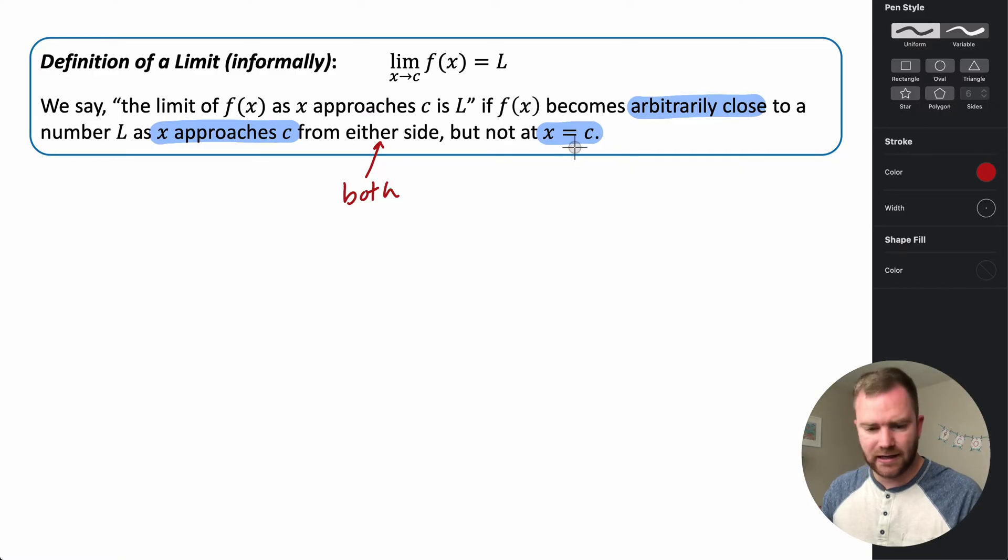Now when it says not at x equals c, this doesn't mean that it can't happen at x equals c, but it does not have to happen at x equals c. So if the function isn't defined or has a different value at x equals c, at the number that x is approaching,